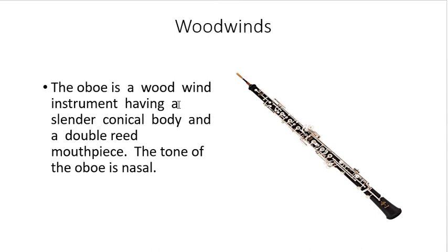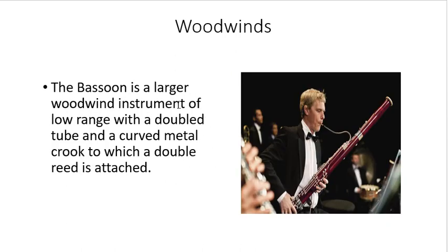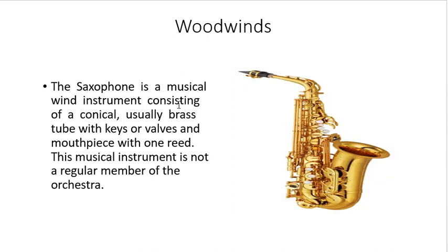The oboe is a woodwind instrument having a slender conical body and a double reed mouthpiece. The tone of the oboe is nasal. Next is the bassoon — a larger woodwind instrument of low range with a double tube and a curved metal to which a double reed is attached. The saxophone is a musical wind instrument consisting of a conical, usually brass tube with keys or valves and a mouthpiece with one reed. The saxophone is not a regular member of the orchestra.